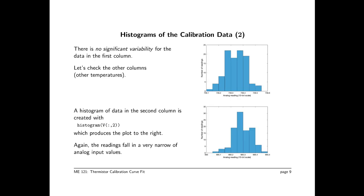This slide shows the first column histogram and the second column histogram. The lower plot is obtained with histogram v colon comma 2. The colon again is the wildcard. Now 2 indicates the second column. And that histogram also has a central tendency, which is good. And all the values are in a very narrow range, 665 to 665.5. It turns out that the data set that I have here has an extremely well behaved set of analog input readings for the calibration data.